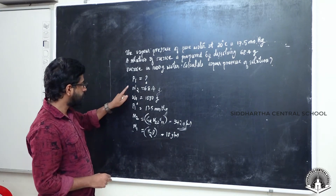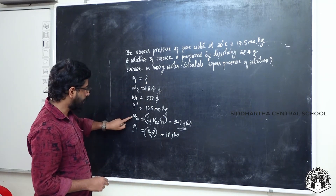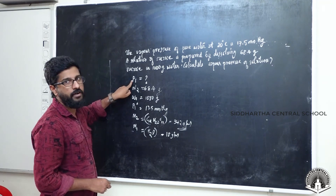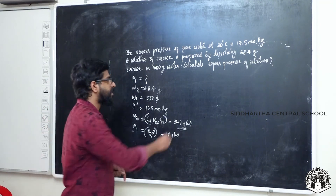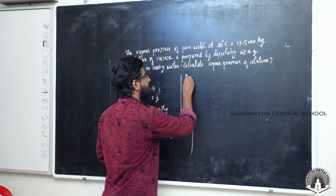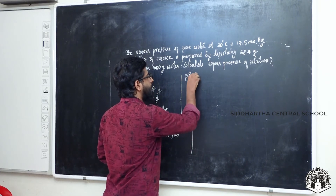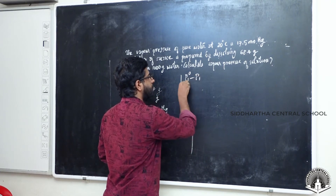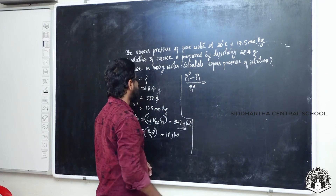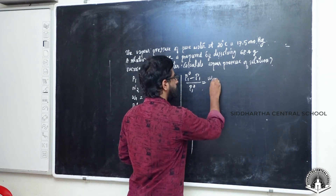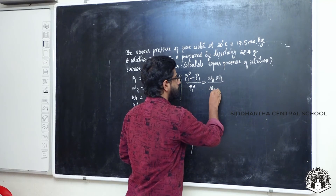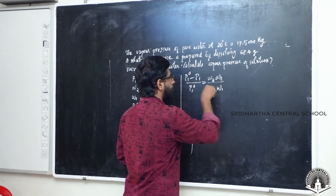Now we have all the terms: W2, W1, M2, M1, and P1⁰. We can easily find P1 using the expression: (P1⁰ − P1) / P1⁰ = (W2 × M1) / (M2 × W1).